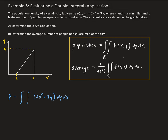The inner bounds are going to be from 0 to 2x minus 2. The reason is because we need to find the equation of that line. Looking at the rise over run, we're going up 4 and over 2, so this is going to be y = 2x plus some intercept.